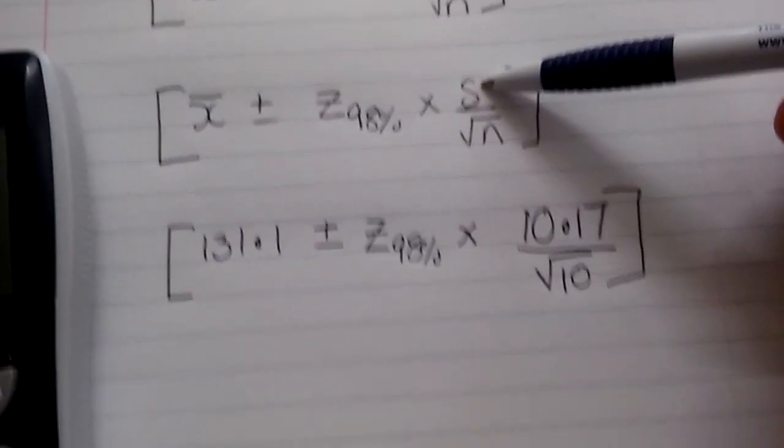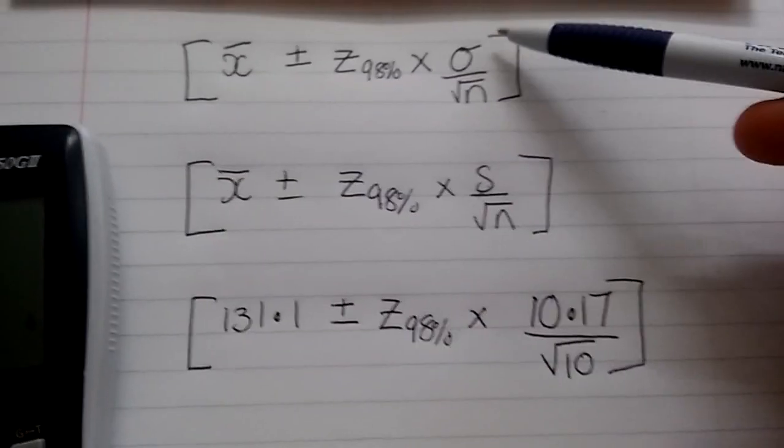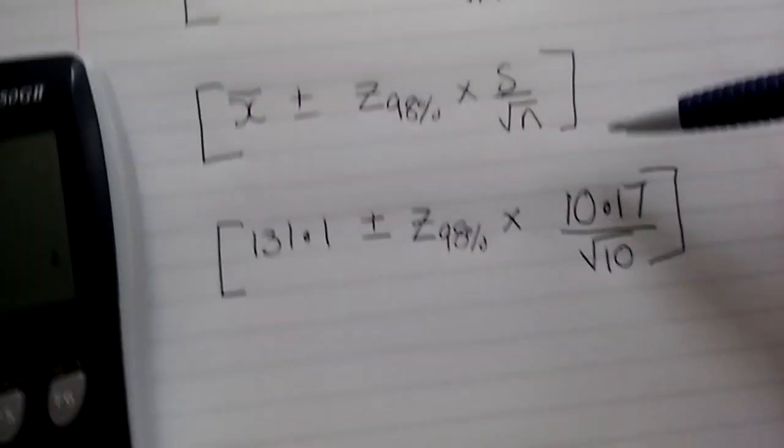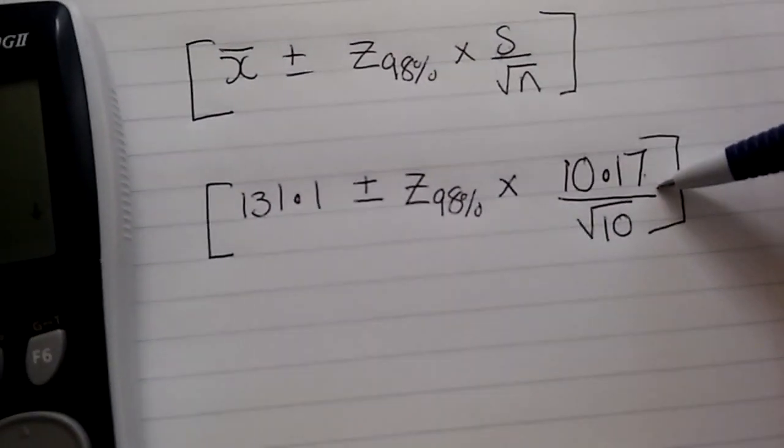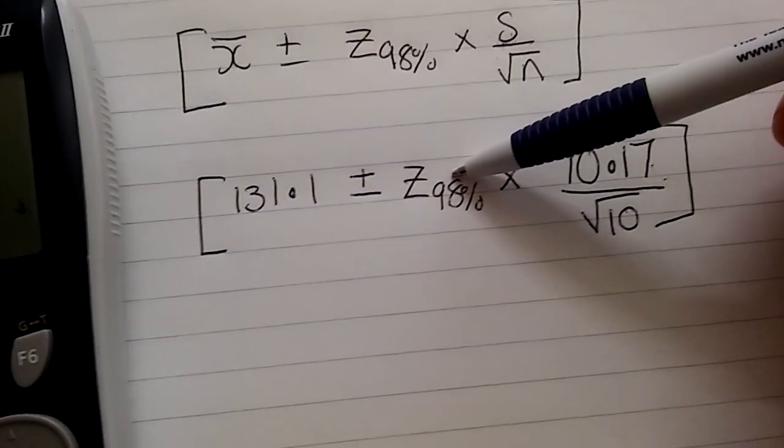So I've used the S one. However, as I say, half the time in the stats exam, they don't care if you use the right standard deviation or not. But if it's definite this is a sample, then maybe we should use a sample one. And it's 10.17. So we've got that. We need to find this Z value.